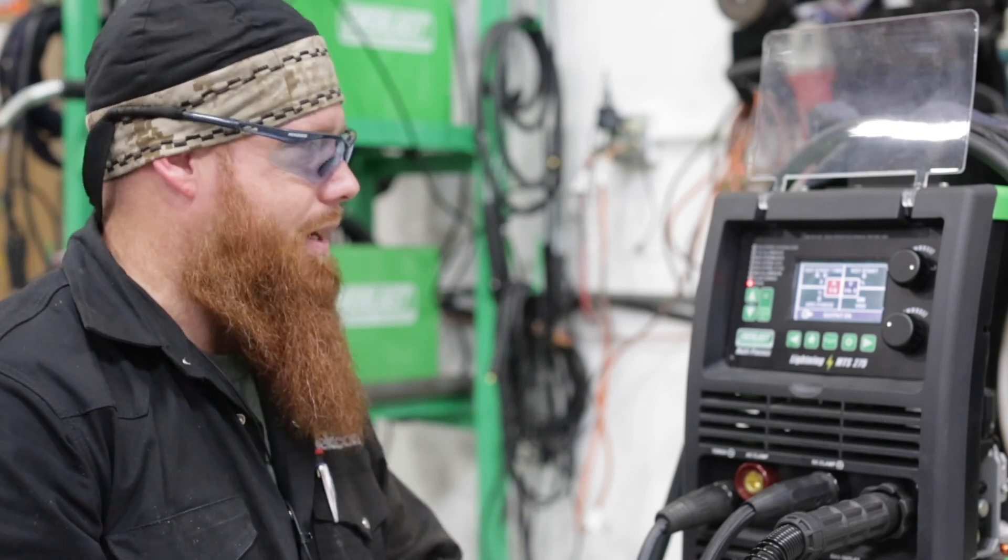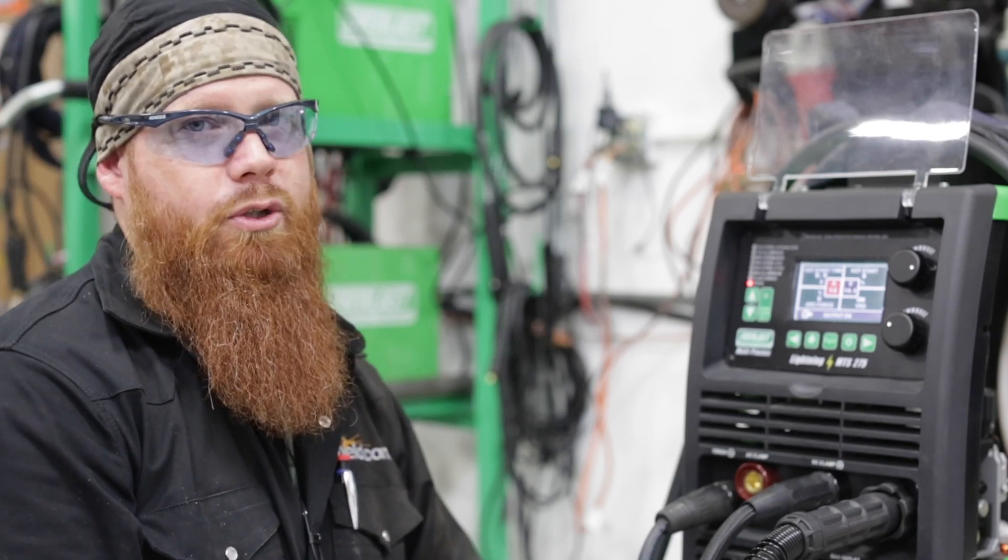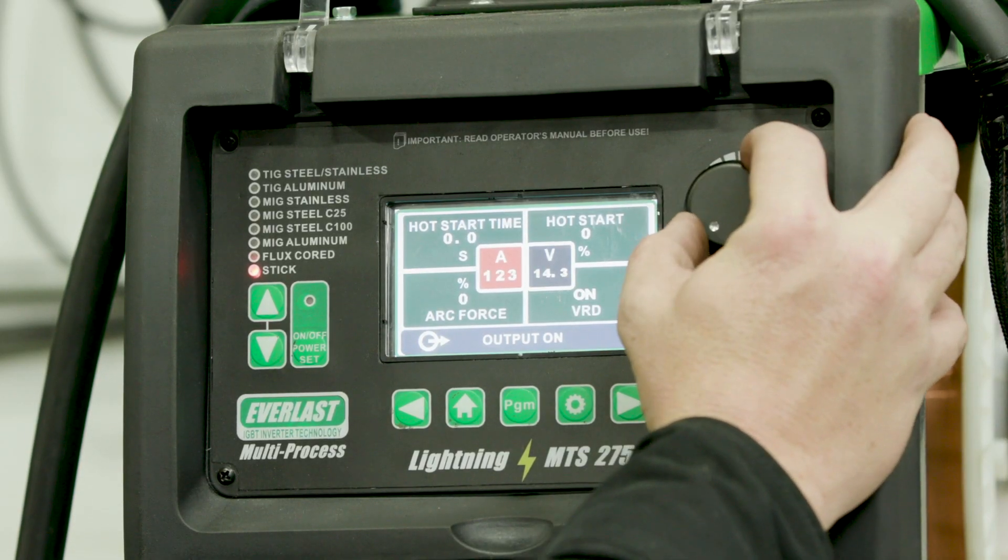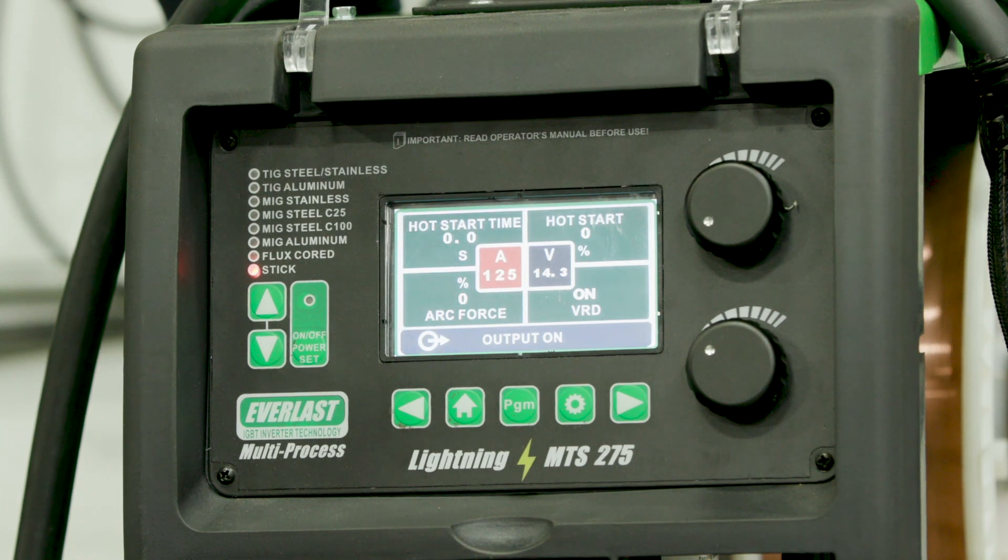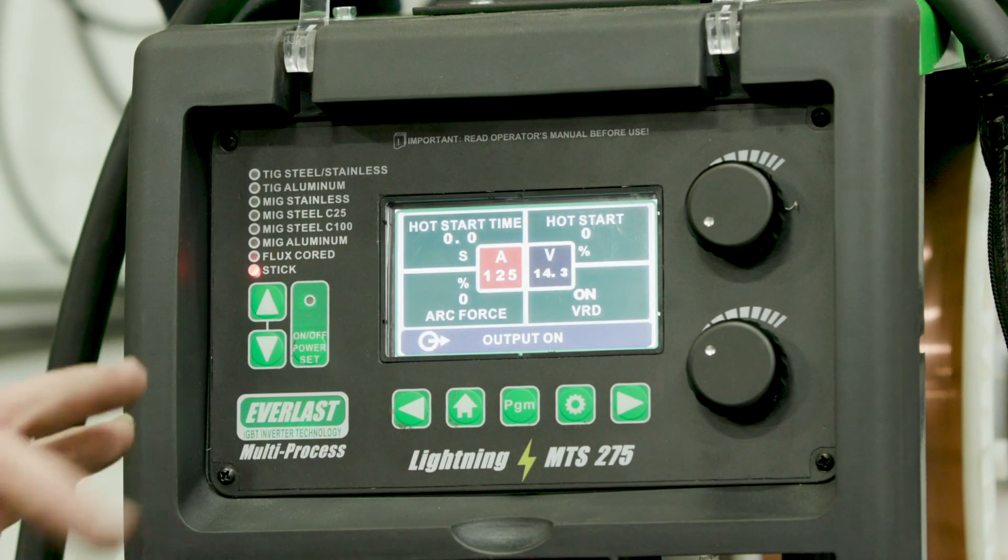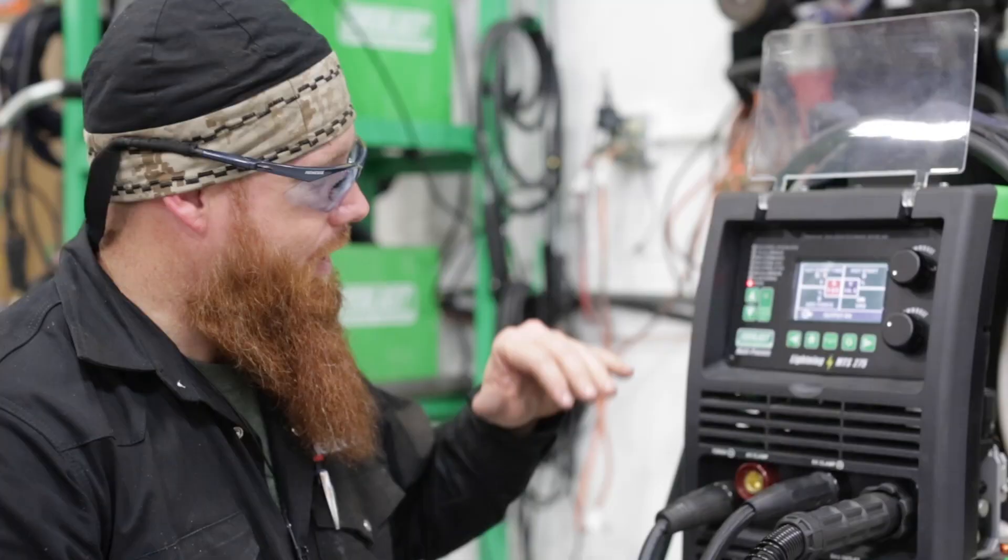First thing we're gonna do is run this thing bare bones. I'm gonna run a 1/8 inch 7018, decimal equivalent is 0.125, so we'll start out at 125 amps. That's about where I like to run anyway. We'll set that up, then come back and start adjusting the other functions to show you what they do. I just want to check out arc initiation without hot start or arc force on at all.